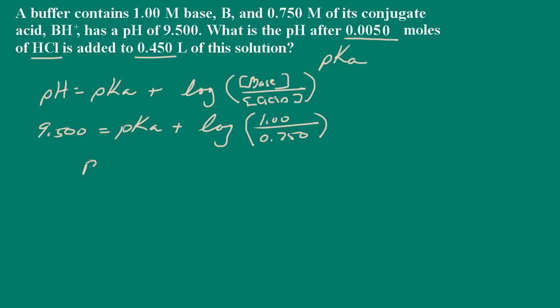So now all we need to do is solve for pKa. And that's equal to 9.5 minus the log of this ratio. And when we calculate this we get a pKa of 9.38. So there's our pKa.